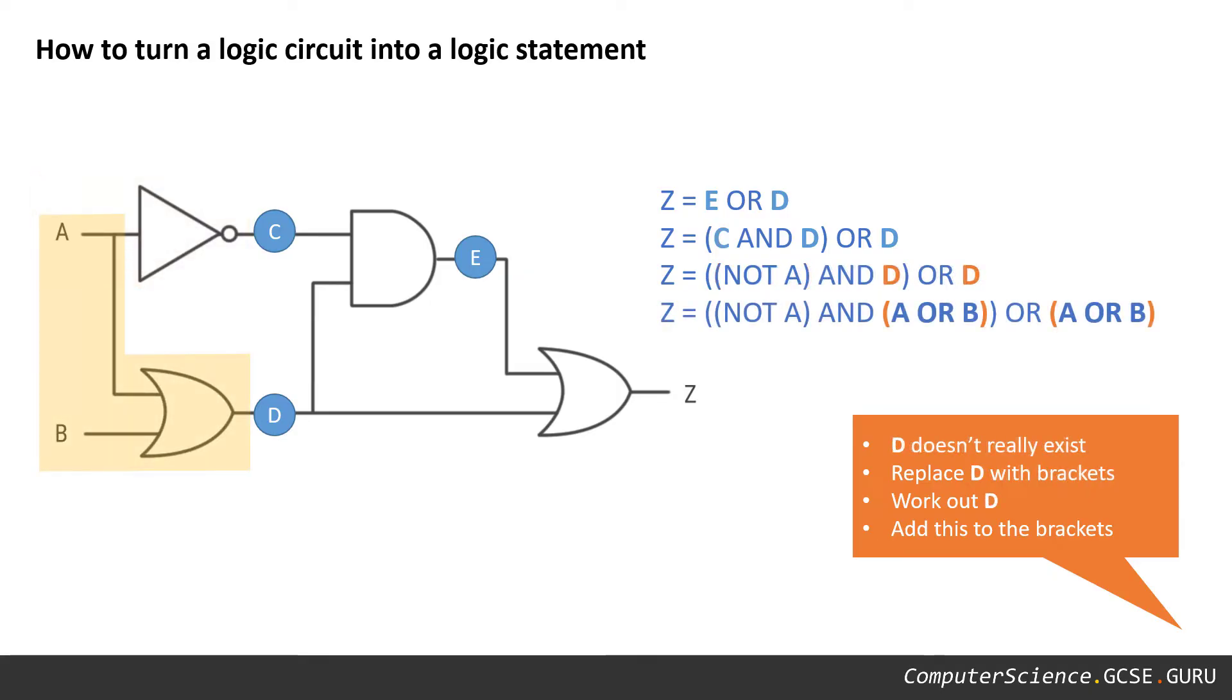Finally, we're left with the letter D which also doesn't exist, so D in each occurrence needs to be replaced with another set of brackets and we need to work out what D actually is, and the expression for D is A or B.